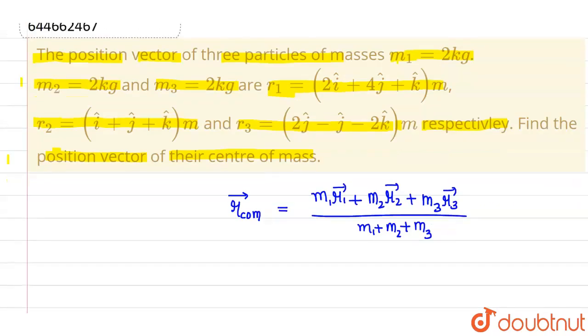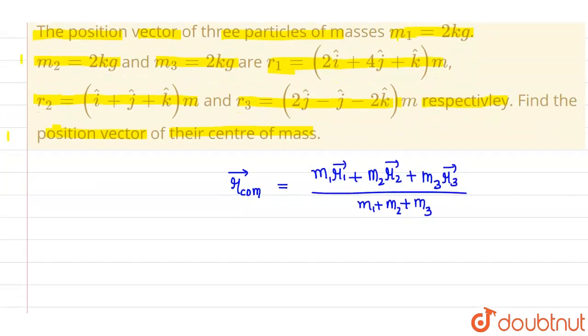Now if I substitute the respective values of m1, m2, m3 and r1, r2, r3, I will get: position vector of center of mass equals 2kg times (2i cap + 4j cap + k cap), plus 2kg times (i cap + j cap + k cap),